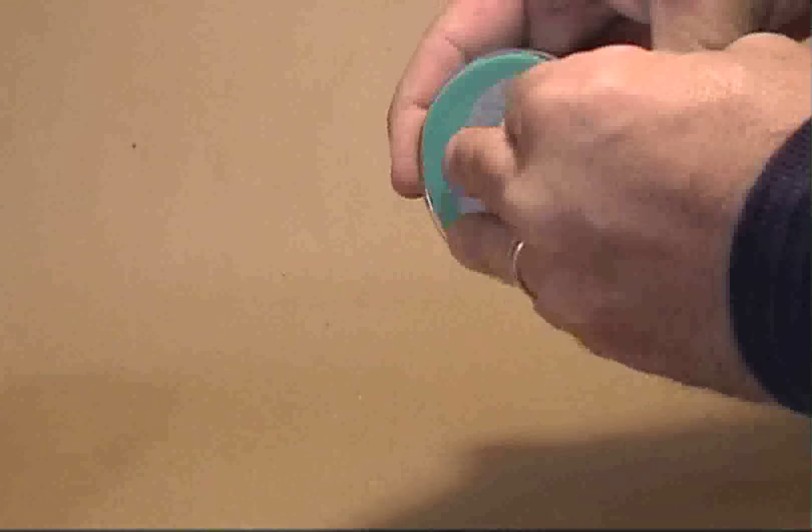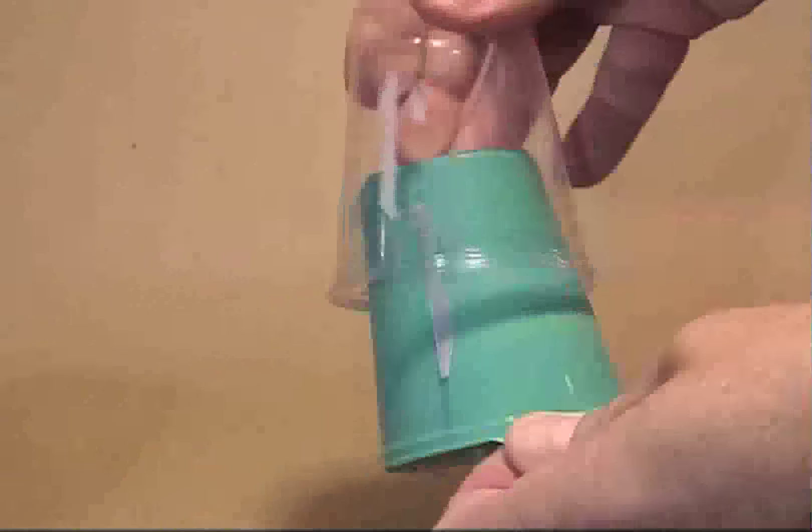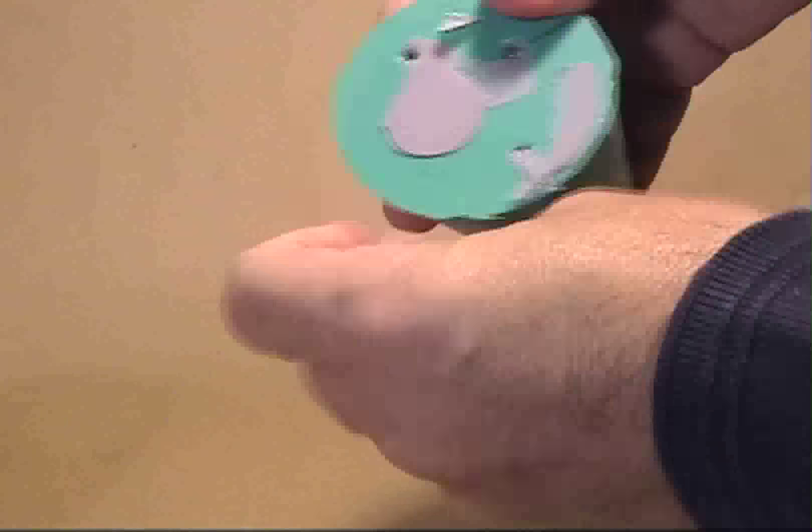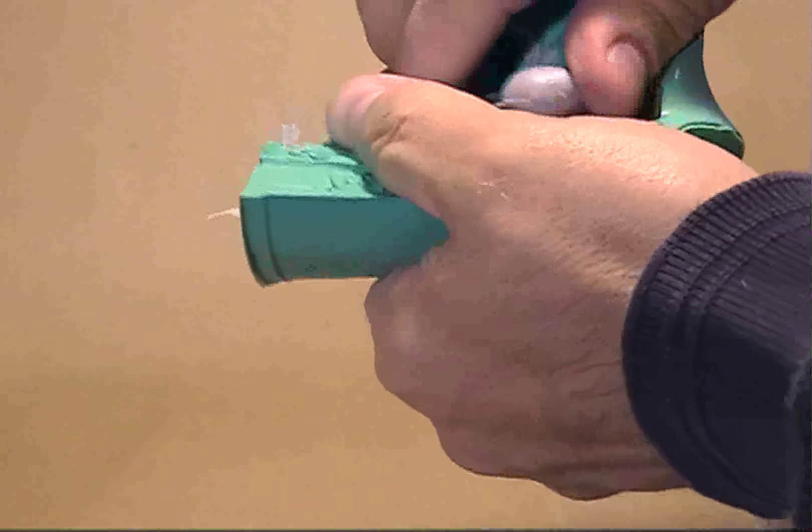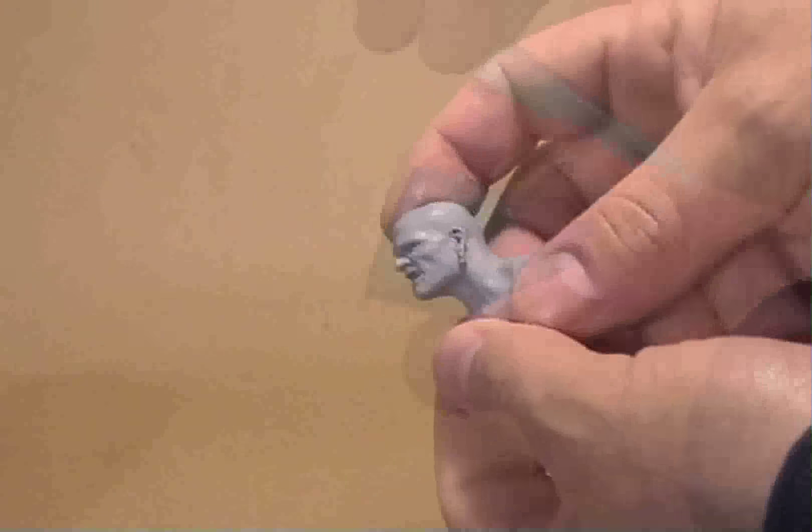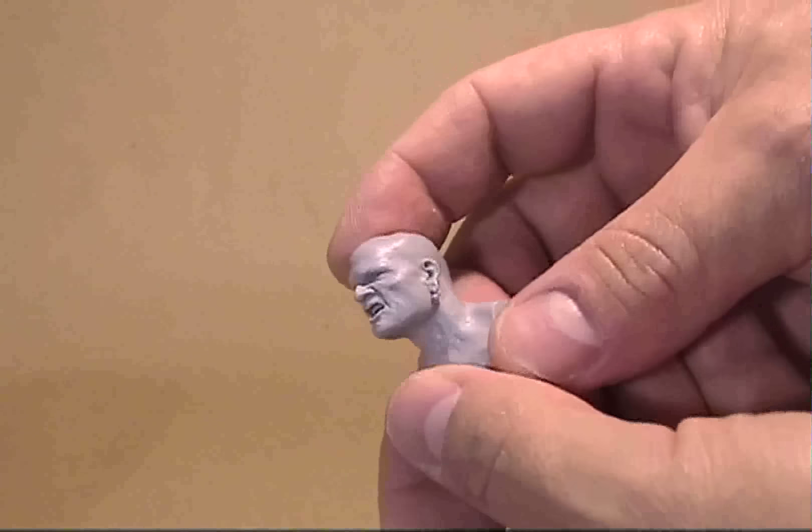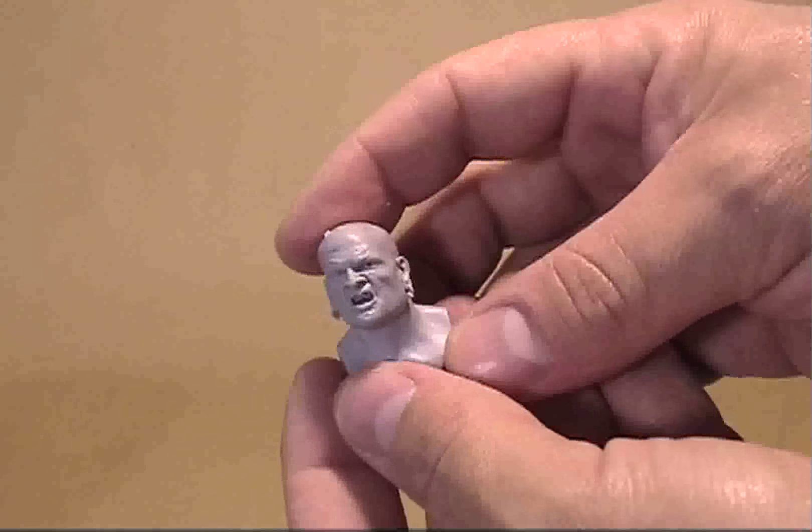Once the resin's cured, I can demold it. This usually takes about 20 minutes. Unless it's a little hotter, then it might be 10. But 20 is a good standard. You probably wondered why I had such a big pour spout. It helps actually push the air out of the mold so you have less bubbles in your piece.